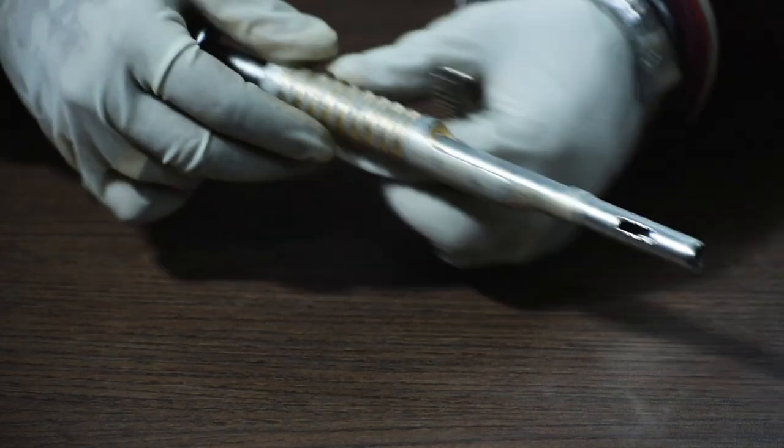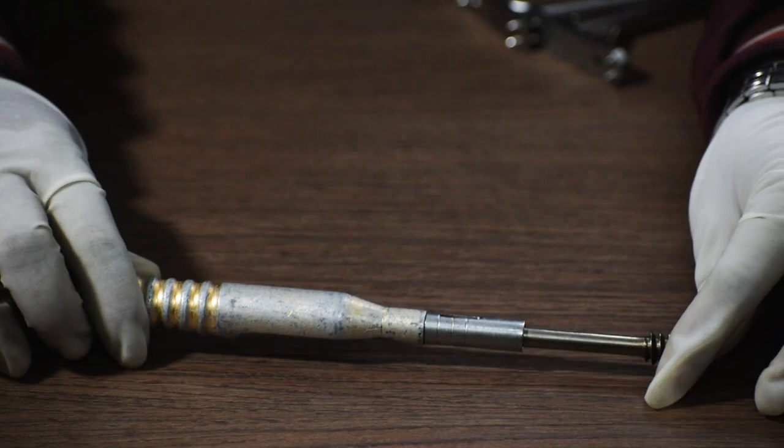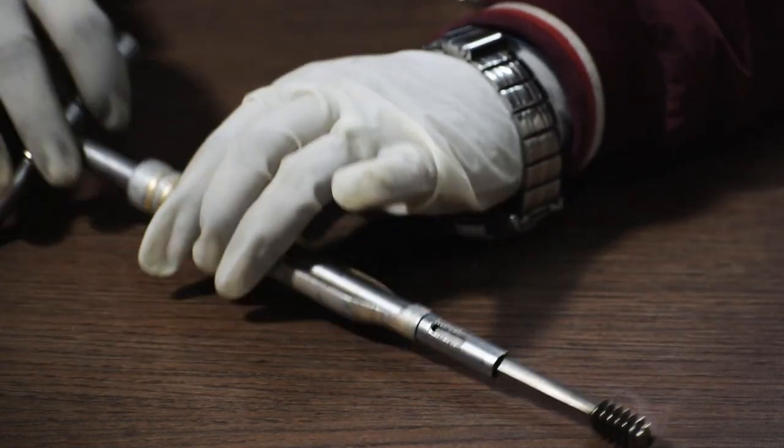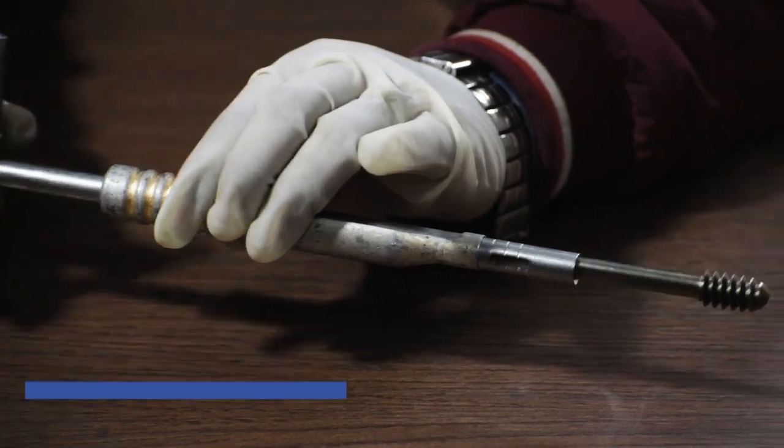After tapping, we will use a T Handle with guide shaft and the long centering sleeve to fix the lag screw in the fracture side. And then we remove the T Handle attachment.